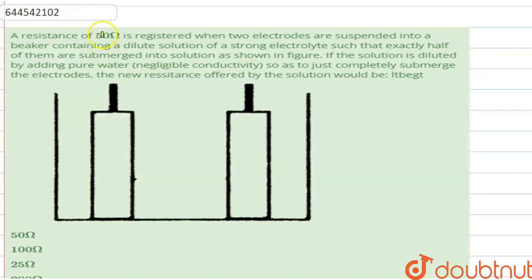The question here is: the resistance of 50 ohm is registered when two electrodes are suspended into a beaker containing a dilute solution of a strong electrolyte, such that exactly half of them are submerged into a solution as shown in the figure.